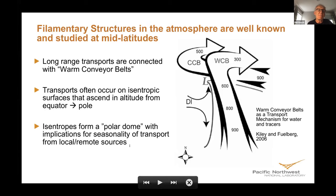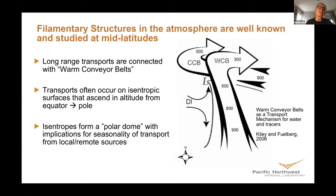There's a well-understood phenomenon called a polar dome, which describes a set of transport processes. Isentropes act as a reasonable surrogate for material surfaces where there's no transport. They tend to be lower in altitude in the tropics and higher as you move toward the poles. Since transport occurs on those surfaces, it's a mechanism for getting stuff to the pole, but it tends to appear at altitude. Transport processes operating near the surface are trapped or restricted to sources that are closer to the surface at high latitudes.